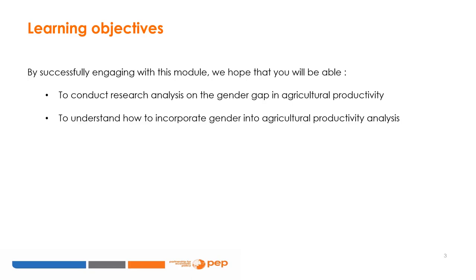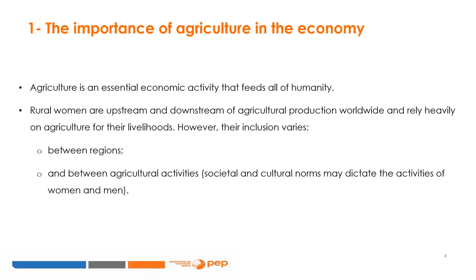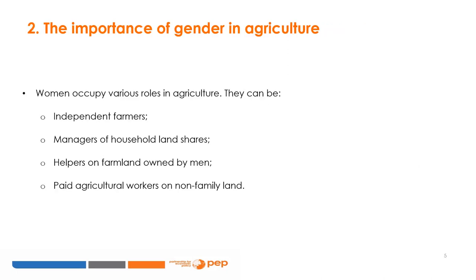What about the implication of gender and agriculture? Agriculture is an essential economic activity that feeds all of humanity. Although rural women are both upstream and downstream of agricultural production worldwide and rely heavily on agriculture for their livelihoods, their inclusion varies between regions and between agricultural activities. Women's roles in agriculture are varied — they can be independent farmers, managers of household land shares.